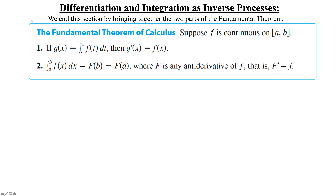Let's look at the fundamental theorem of calculus. Suppose that f is continuous on a closed interval from a to b. If g of x is equal to the integral from a to x of f of t dt, then g prime of x should equal f of x, which is right where we started, with now an x located in there.